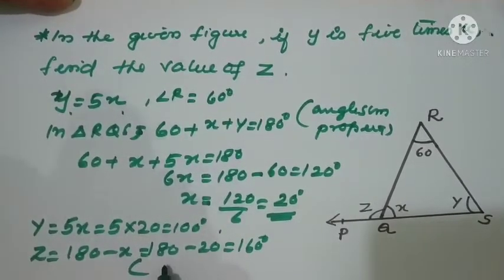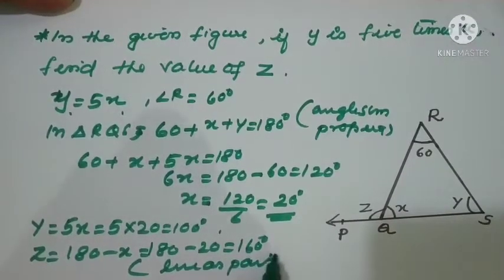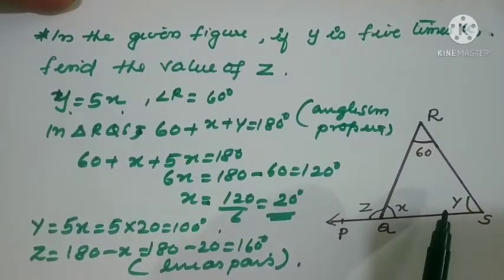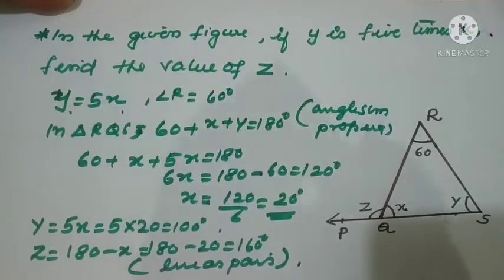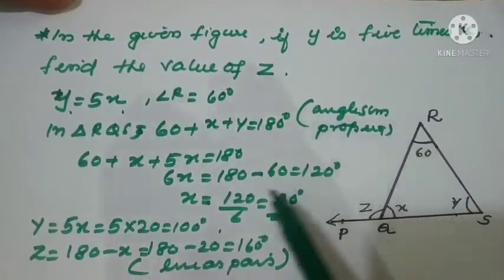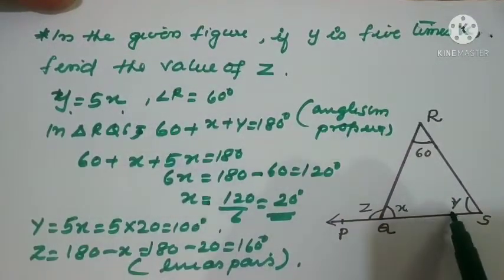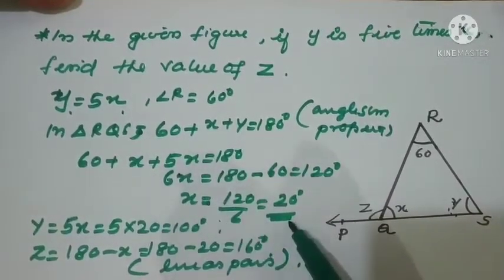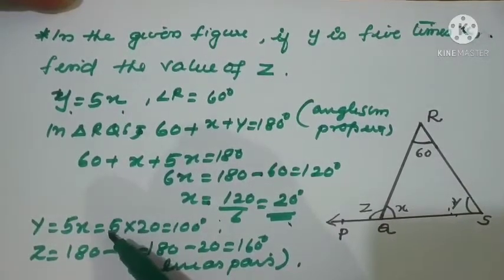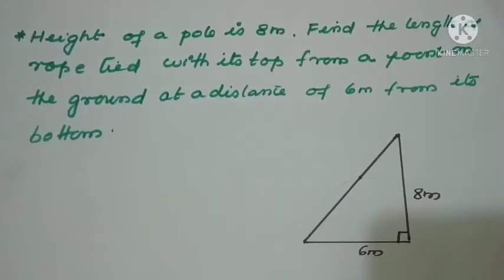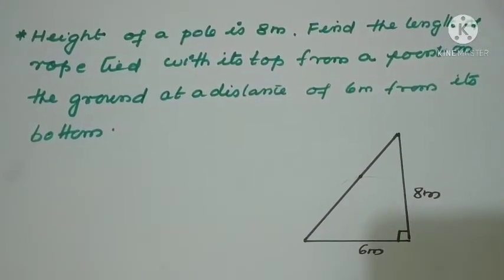Z equals 180 minus x, so 180 minus 20 equals 160 degrees — the reason being linear pair. Summary: y equals 5x gave y equals 100; angle R is 60 degrees so angle sum property gives x equals 20; z is a linear pair so 180 minus x equals 160 degrees.